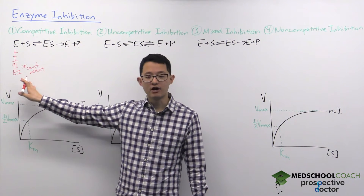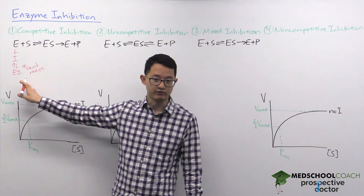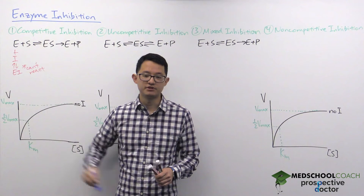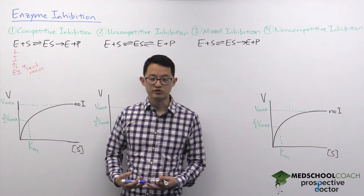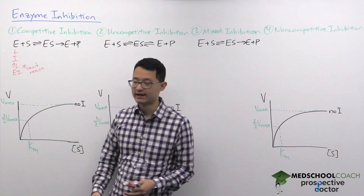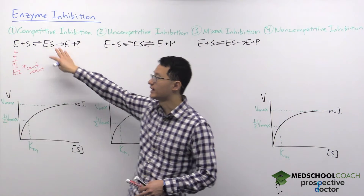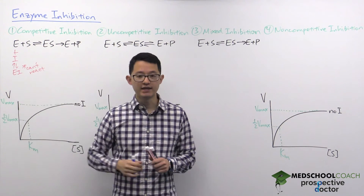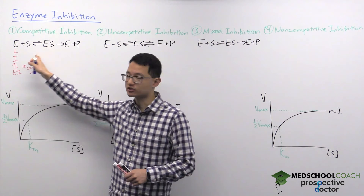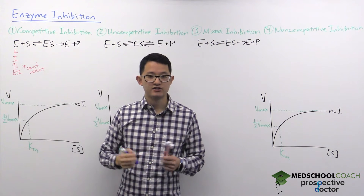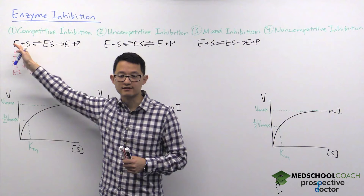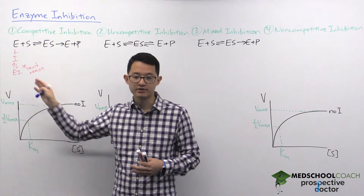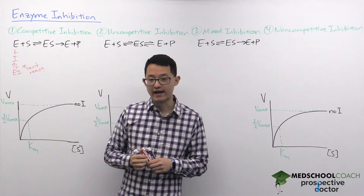There are a couple of important pieces of information you need to know here. Number one is where does the inhibitor bind on the enzyme. The name essentially gives it away — this is competitive inhibition, so the inhibitor is competing directly with the substrate to bind to the enzyme. The substrate binds to the active site, so to compete, the inhibitor is also binding to the active site.